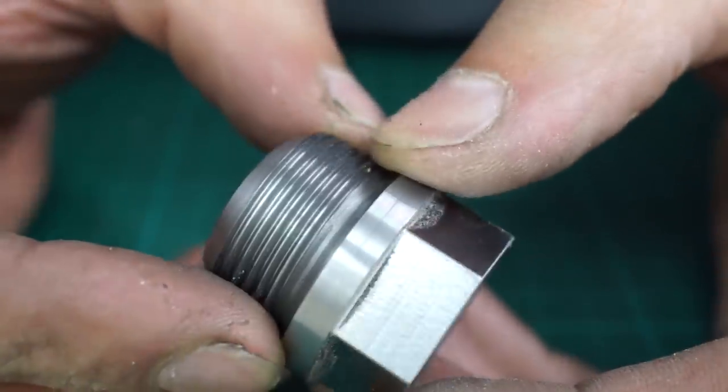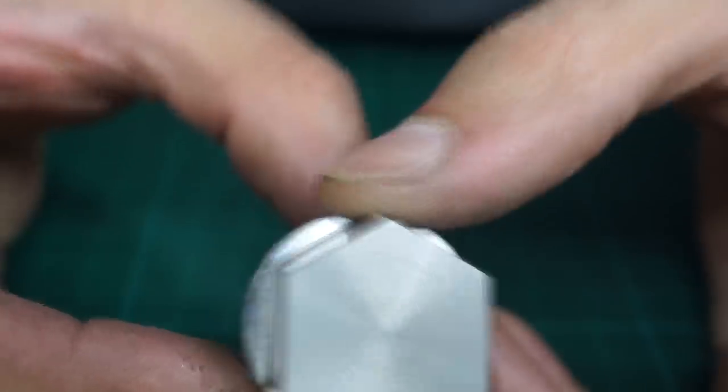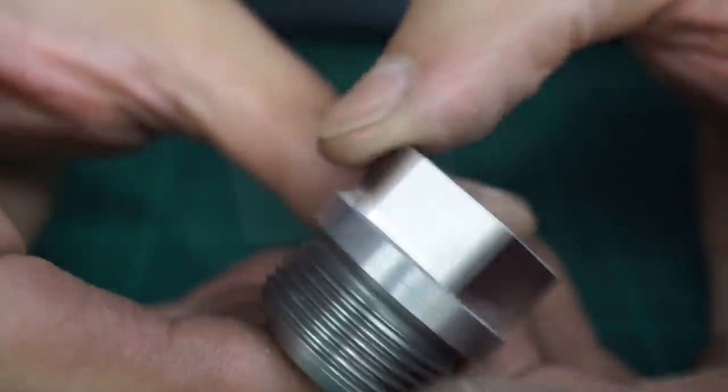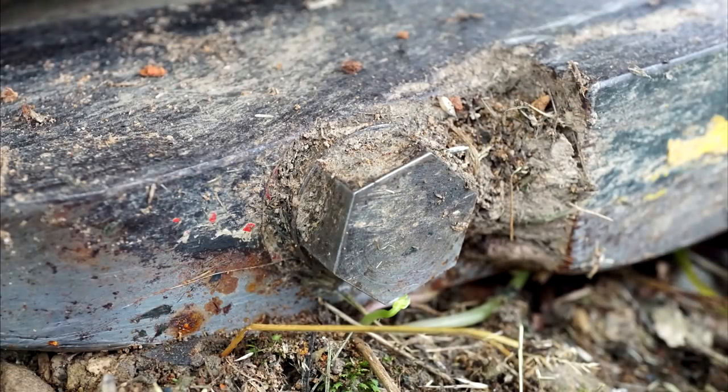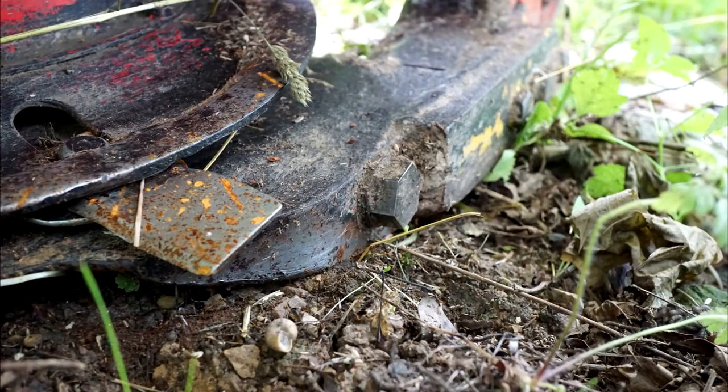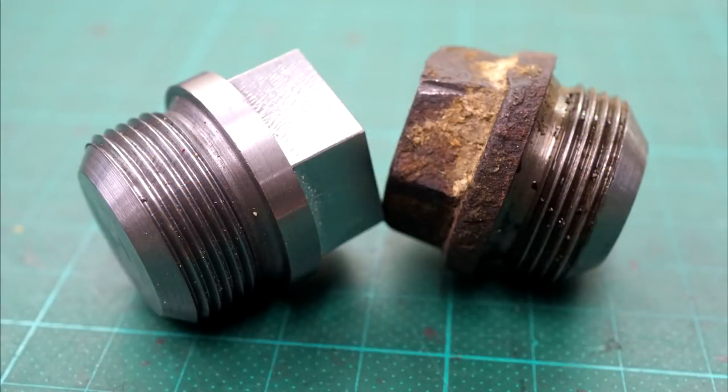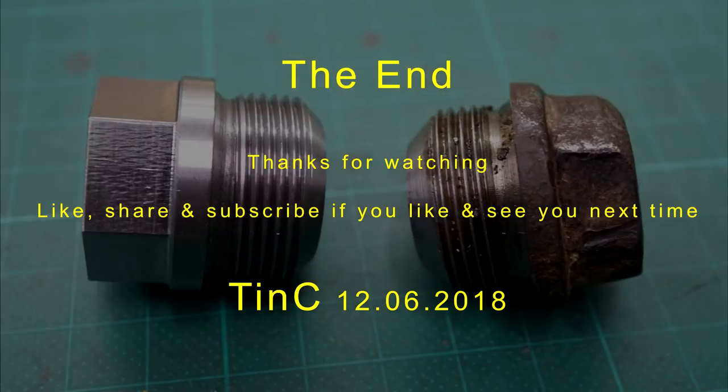That's it. After about 2 hours of work I got a pretty nice screw out of a piece of steel. Also after a few hours of work with the mower, the screw does its job just well. The main shaft is in its place and doesn't leak a single drop of oil. So that's it for today. Thanks for watching, like, share and subscribe if you like, and see you next time.